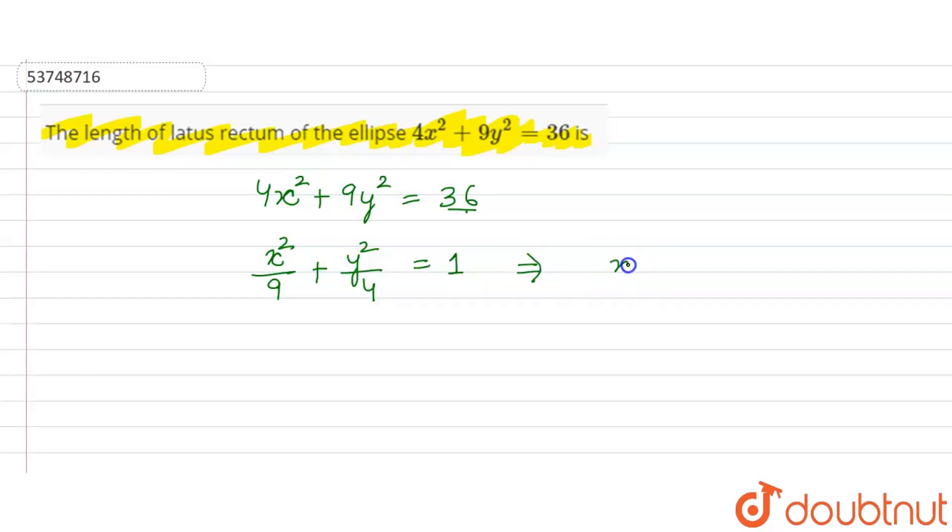And you can write it as x² by 3² plus y² by 2² is equal to 1. And the ellipse of the general equation is x² by a² plus y² by b² is equal to 1.